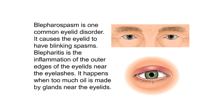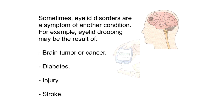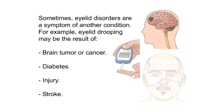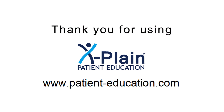Blepharospasm is one common eyelid disorder that causes blinking spasms. Blepharitis is the inflammation of the outer edges of the eyelids near the eyelashes, caused by too much oil from glands near the eyelids. Sometimes eyelid disorders are a symptom of another condition such as a brain tumor, cancer, diabetes, injury, or stroke. Contact your health care provider if you have eyelid problems that do not improve after a week, or if you experience unusual growths, discharge, eyelid drooping, or complete closing of the eyelid.